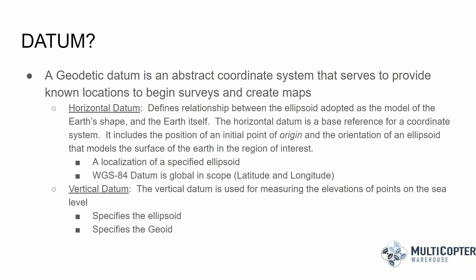The last term to discuss is datums. A geodetic datum is an abstract coordinate system that serves to provide known locations to begin surveys and create maps. The horizontal datum defines the relationship between the adopted ellipsoid model and the earth's actual shape, serving as the base reference for the coordinate system. It includes the position of its initial point or origin and the orientation of the ellipsoid model at the surface of the earth.